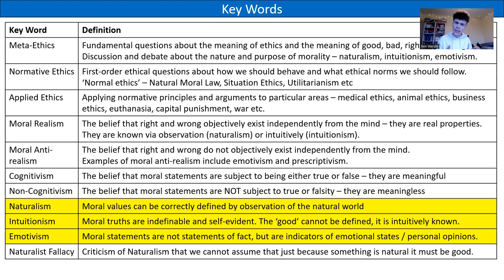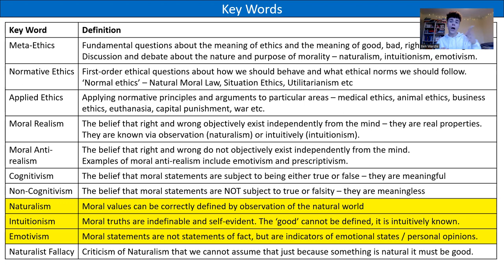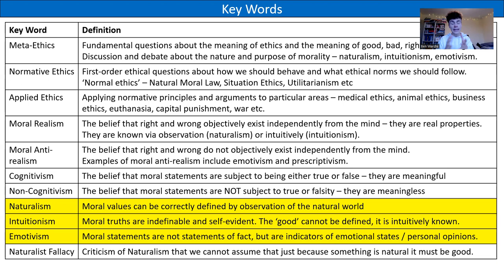Just to put this into context: within ethics, we have three different tiers. We've got meta-ethics at the top, which is the bird's eye view. Then we've got normative ethics, and just below that, applied ethics. We've already looked at normative ethics, because it deals with first-order ethical questions about how we should behave and what ethical norms to follow. We've looked at natural moral law, situation ethics and utilitarianism. Notably, natural moral law and utilitarianism are both examples of naturalism.